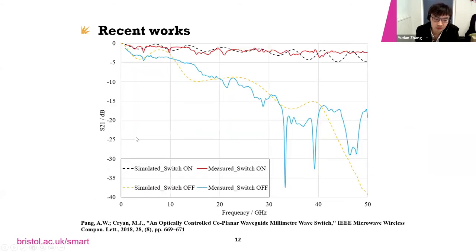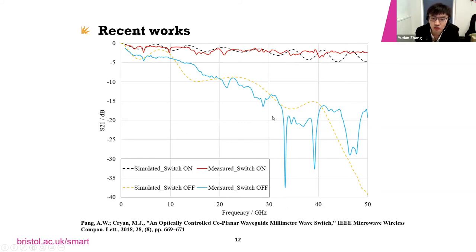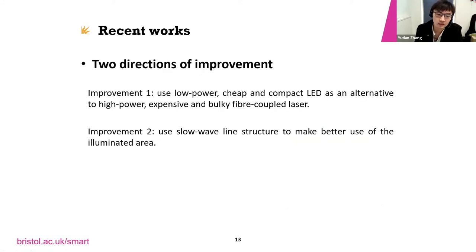Here are the S-parameter results of the switch. The on-state or dark-state S21 transmission is less than 3 dB loss up to 50 GHz. The isolation under illumination starts to become significant — more than 15 dB — from 30 GHz, showing a very wide-band switching frequency range from 30 GHz to at least 50 GHz.